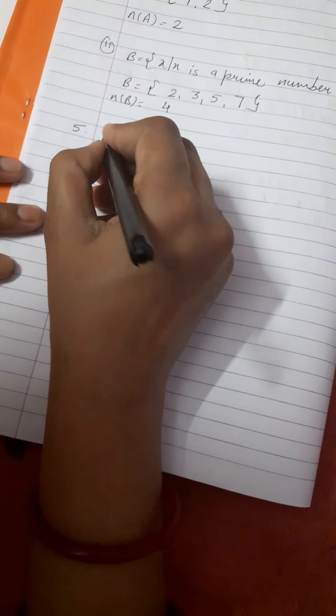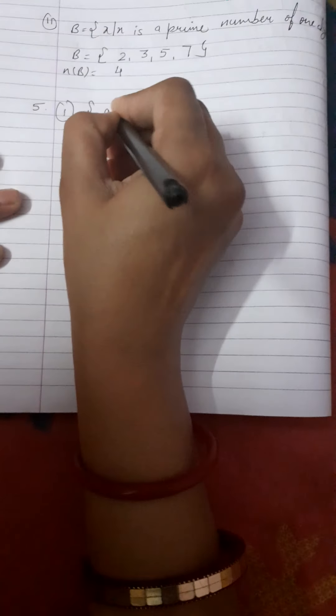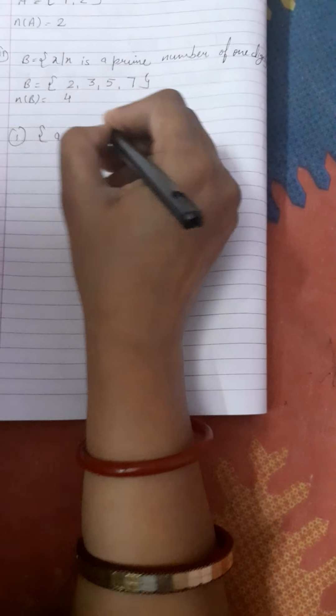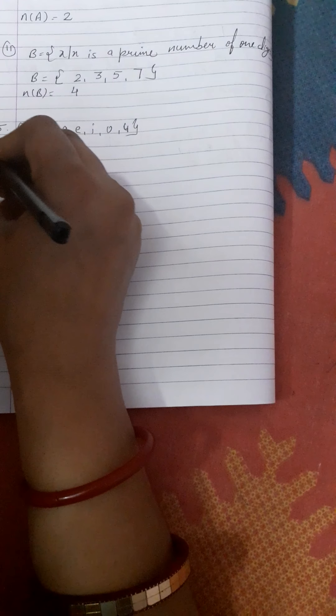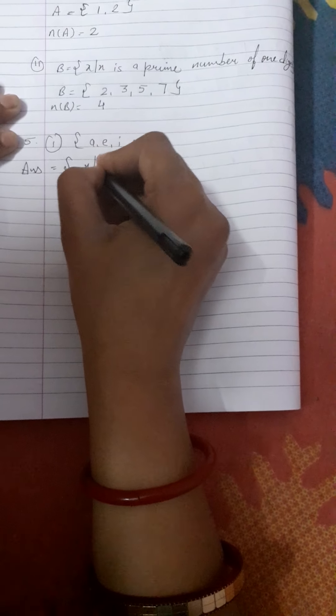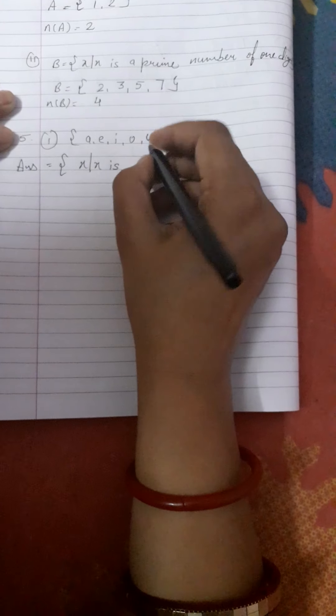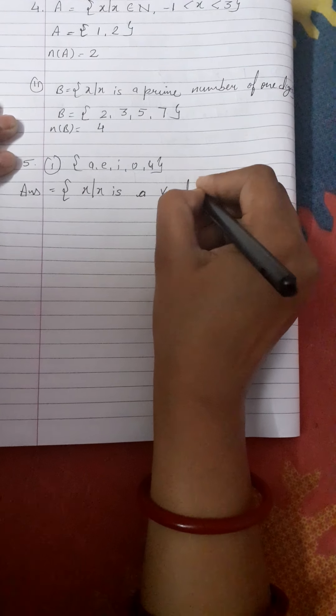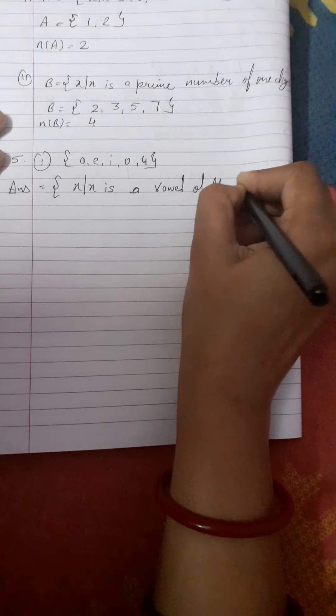Come to question number five: write the following sets in set builder form. The first question is the set {a, e, i, o, u}. As we know, a, e, i, o, u are the vowels of the English alphabet. So we write: x such that x is a vowel of the English alphabet.